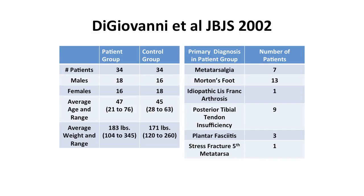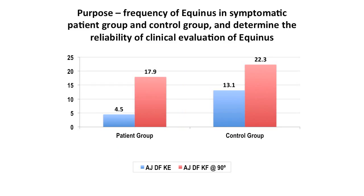Scarlato and Jatman 1975 was the first to describe the subtalar joint neutral position and midtarsal joint position being locked with the knee extended as a plus 10 degrees definition for Equinus. A very good study by DiGiovanni et al. in JBJS 2002 provides a definition we can all work off of. They had two groups of 34 patients each — a patient group and a control group. The patient group included a number of pathologies from metatarsalgia to stress fractures. The patient group averaged 4.5 degrees of ankle joint dorsiflexion with the knee extended, while the control group averaged 13.1 degrees.